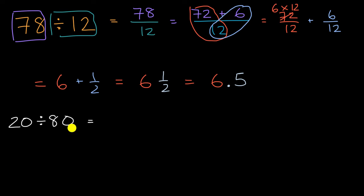Well, we can use a similar technique. We could say, hey, this is the same thing as 20 80ths, or we could write 20 in the numerator and 80 in the denominator. So it's the same thing as 20 divided by 80.